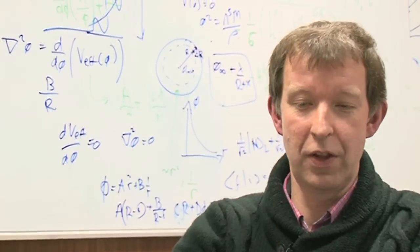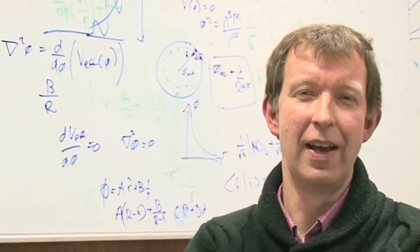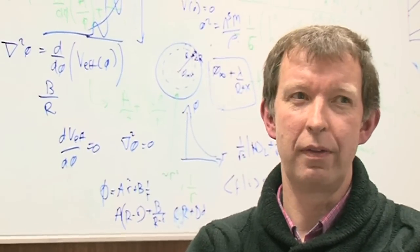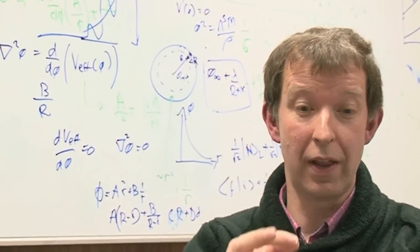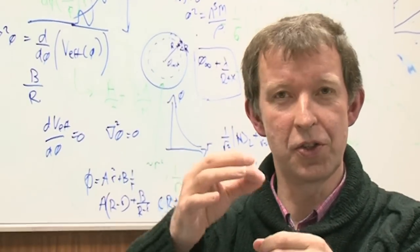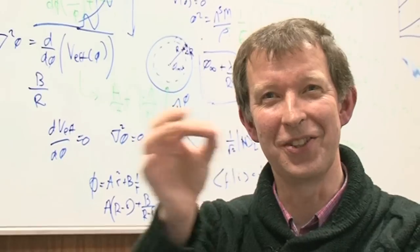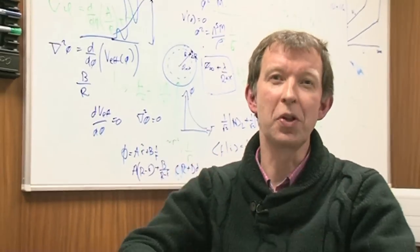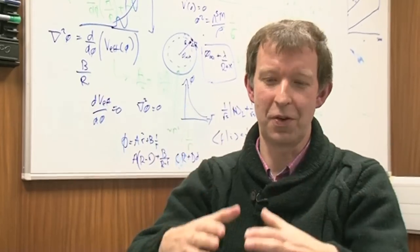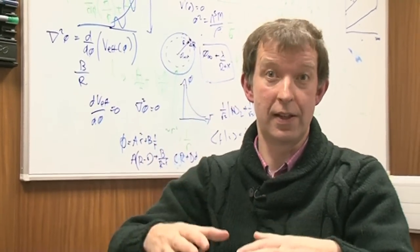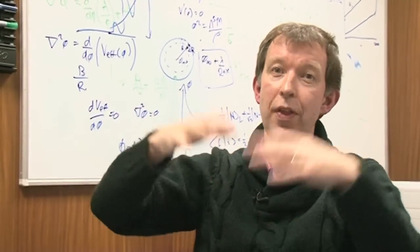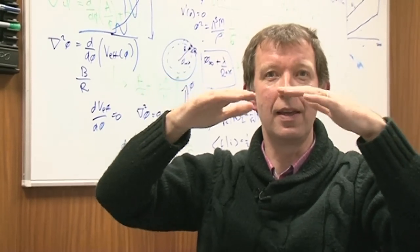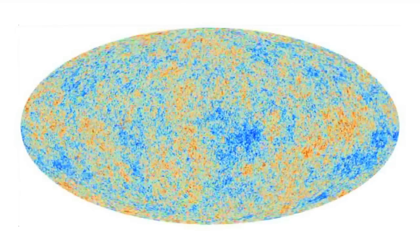And that expansion actually had associated with it small quantum fluctuations in the field that was responsible for the expansion, which is called the inflaton field. Small fluctuations in this field. And it's that that we now see in the microwave background. We see the effect of those small fluctuations. So they were imprinted in our gravitational field much earlier than when the atoms were formed.